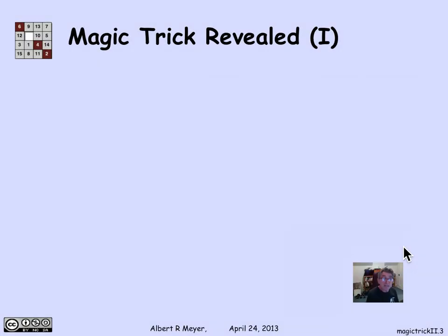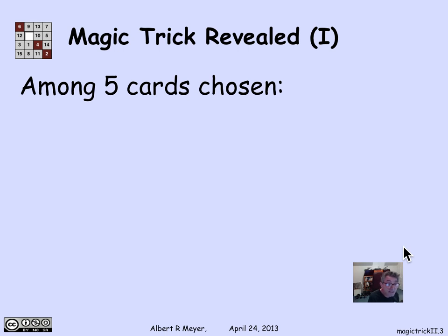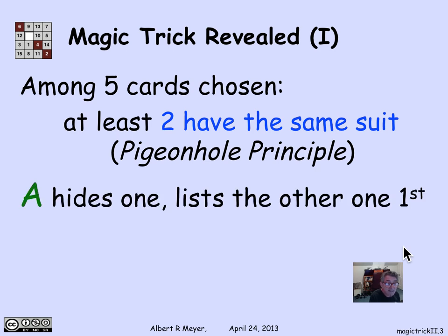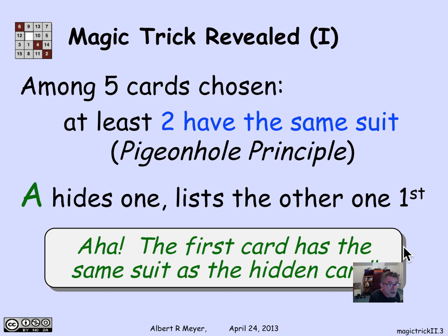The first observation is an application of the pigeonhole principle. Among the five cards chosen by the audience, there have to be at least two with the same suit. The assistant is going to choose one of the two cards with the same suit to hide, and is going to put first in the list of the four cards that he reveals the other card with that suit. This means that the magician, merely by looking at the first card in the list, immediately knows the suit of the hidden card. That's step one.